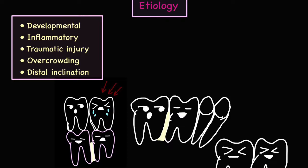The next etiological factor is overcrowding. In cases of overcrowding there is little to no space for the teeth to erupt, so the two teeth might become fused in order to erupt in the oral cavity. By means of cementum deposition, the roots of the teeth might get united, leading to concrescence. The last etiological factor is distal inclination. Whenever there is a distal inclination of a tooth, there is excess cementum deposition, which may cause the roots of adjacent teeth to fuse together — which by definition is fusion below the CEJ by means of cementum.